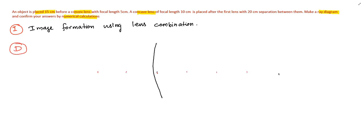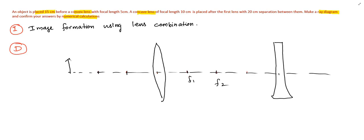In the development session, we can draw the situation. A convex lens and concave lens are separated by 20 cm. The focal length of the convex lens is 5 cm and that of the concave is 10 cm. The object is in front of the convex lens at a distance of 15 cm from it.